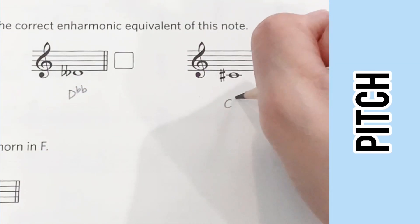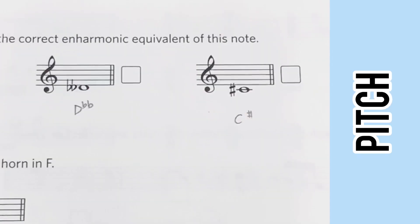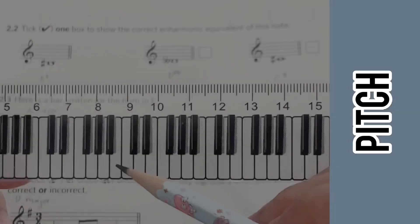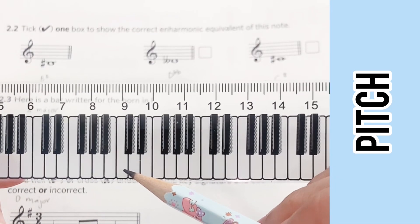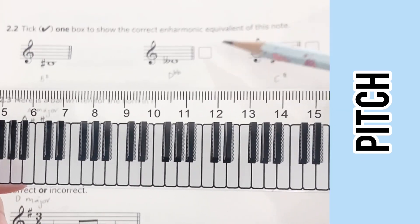The first one is D double flat, C sharp, and C flat. You can visualize it on the instrument that you play. B is here, B sharp is here, and then we'll look at the options given.